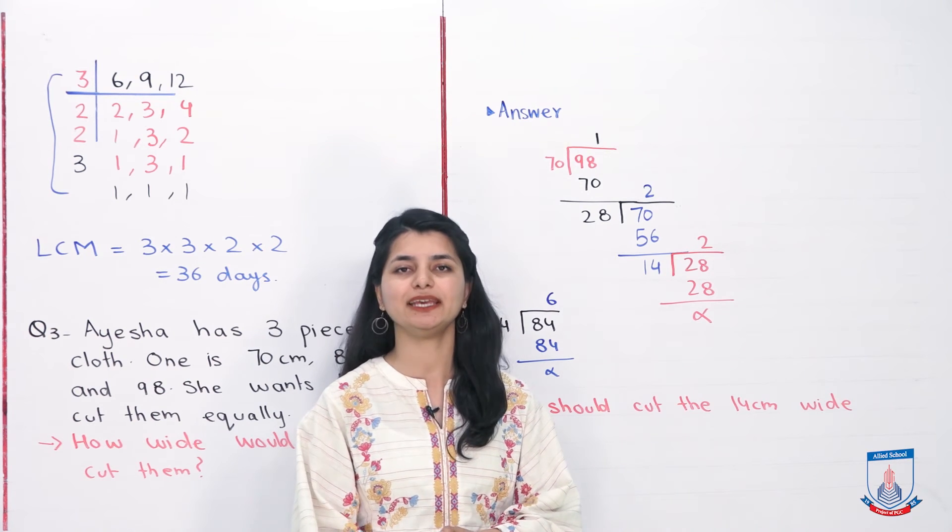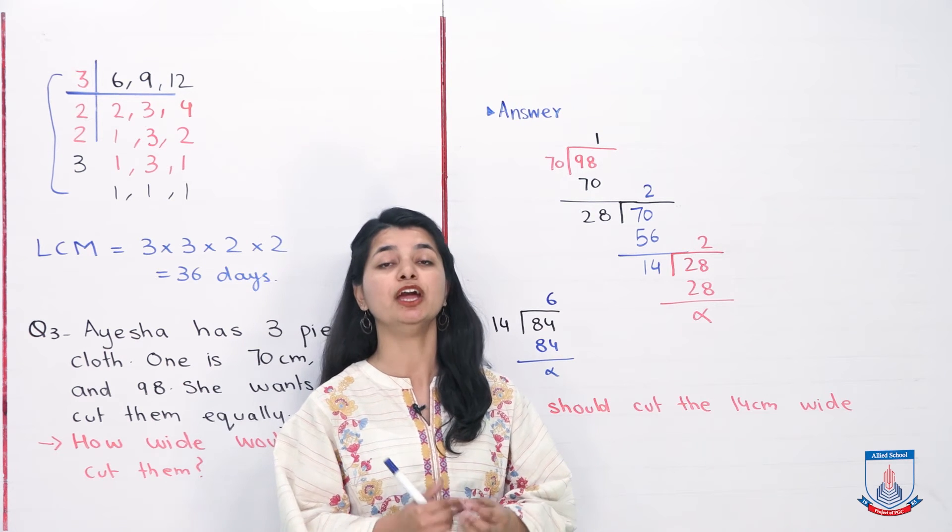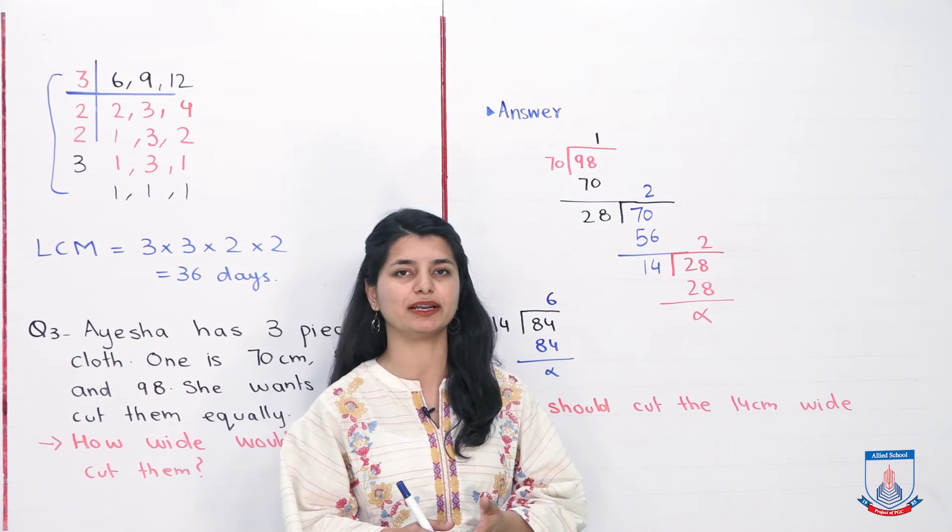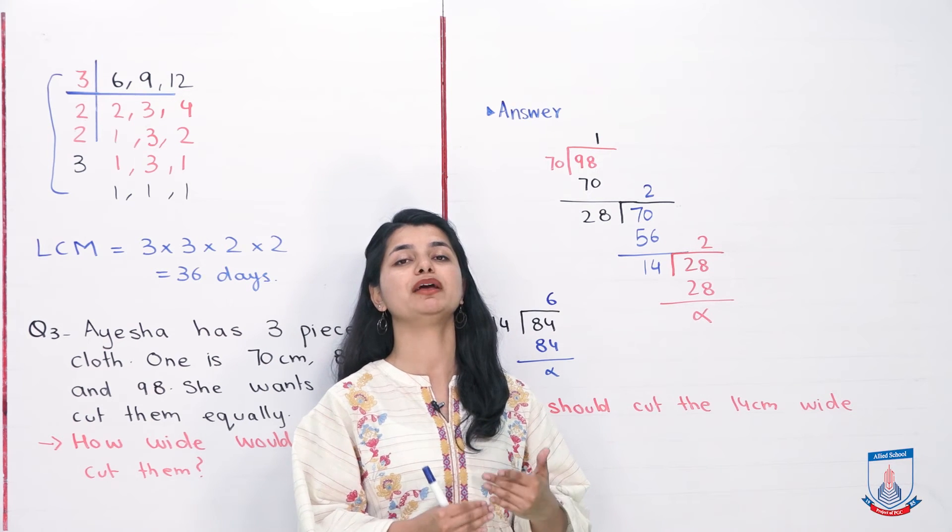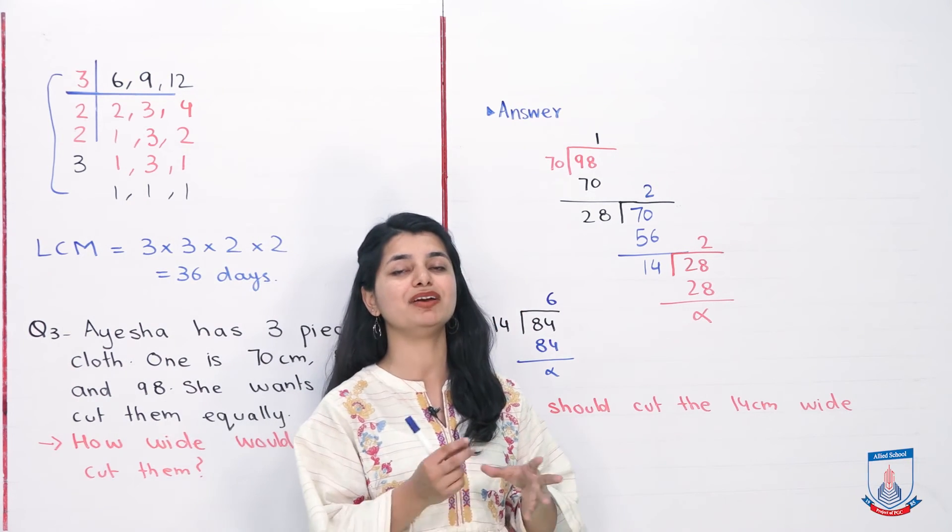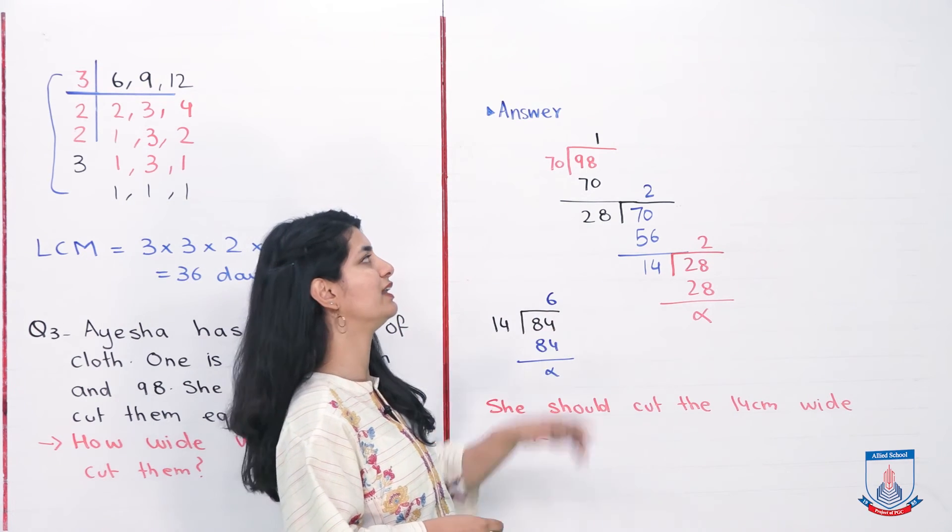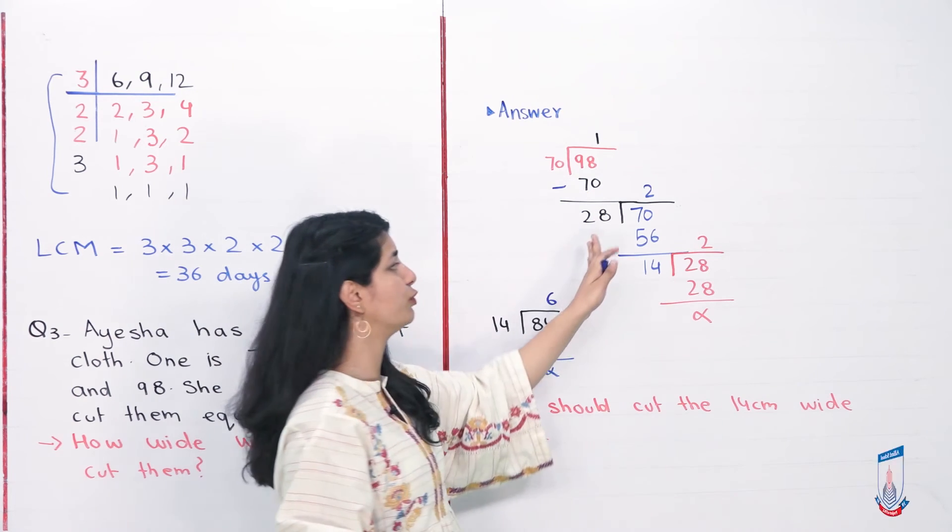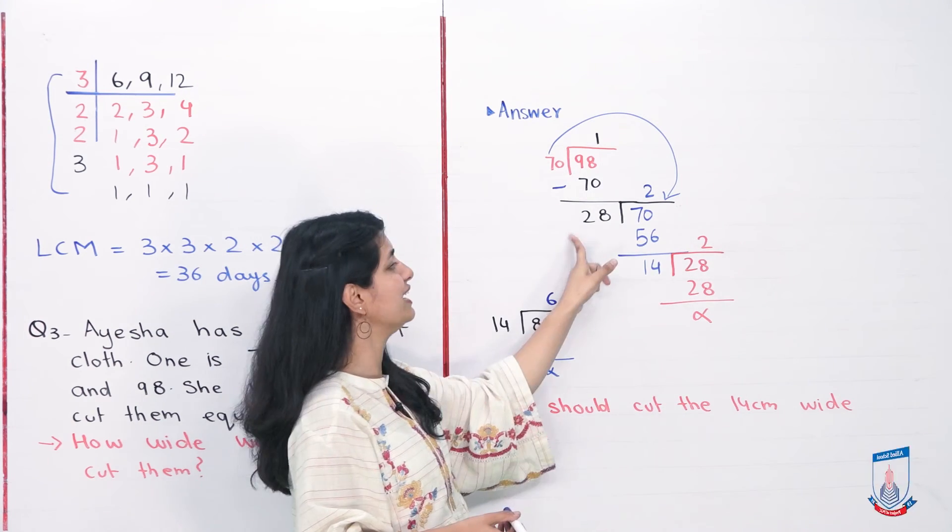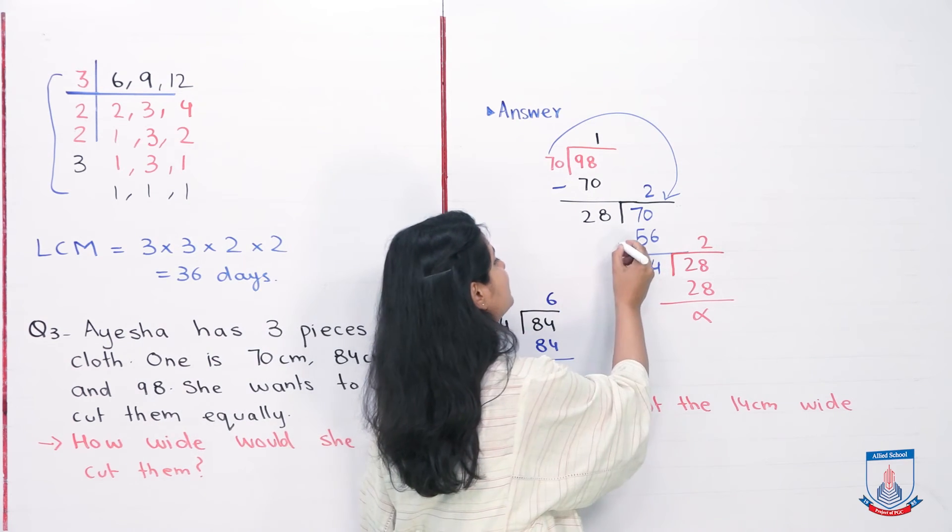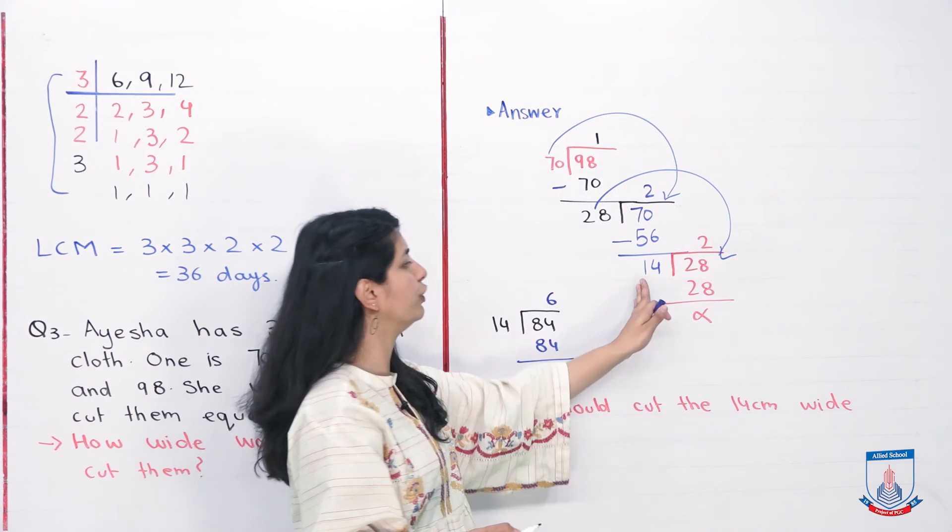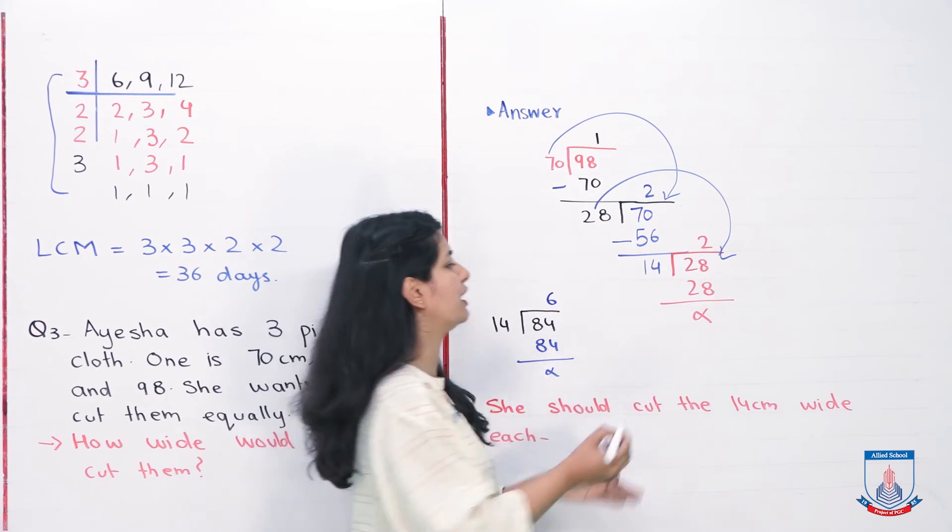Now students, we have not mentioned here whether to use prime factorization or long division. Normally, questions tell you which method to use. Here I use long division because I think we need to practice this topic more. If we look at long division, 98 was the biggest number and 70 was the smallest number in those 3 lengths. So I have to divide them together. 70 goes into 98 once, with 28 remaining. The first divisor becomes the dividend. When I divide 28 into 70, I get 56, and subtracting gives 14. The next dividend is this divisor. Then I will divide 14 into 28, and my remainder is 0.